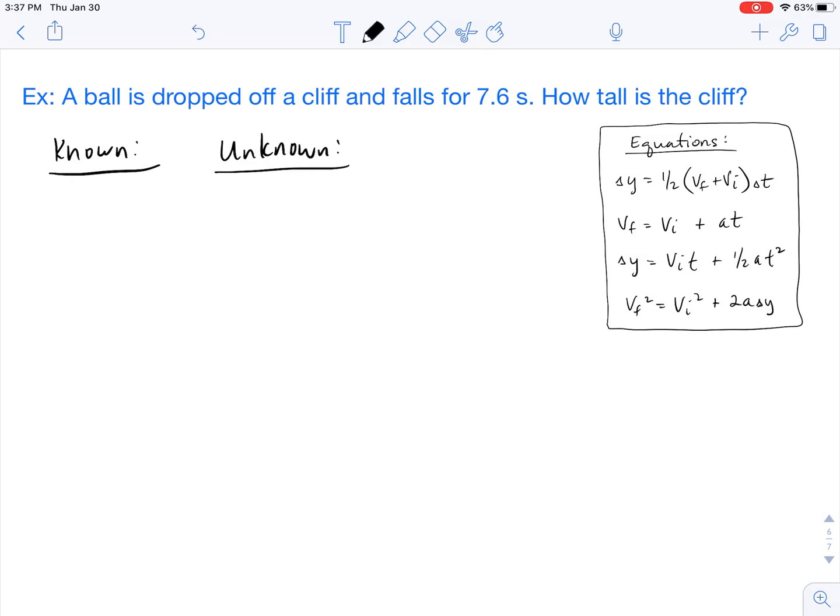As always, we're going to start with our knowns and unknowns, and then from there we'll pick the correct equation. The ball being dropped is actually some information in itself. Whenever an object is being dropped, we know that the initial velocity is 0 meters per second.